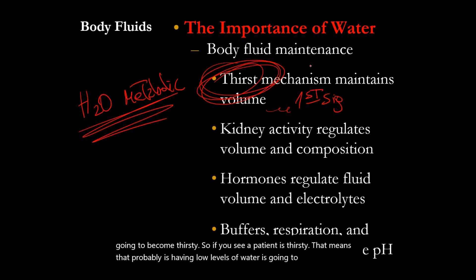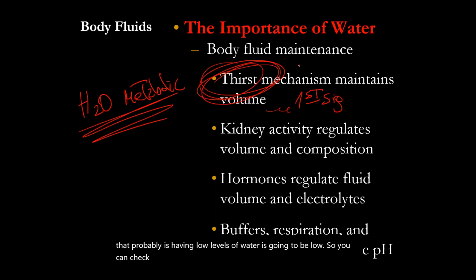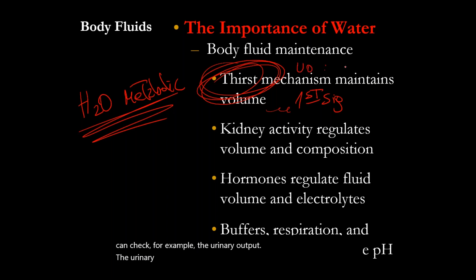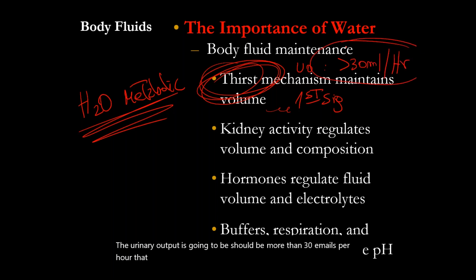You can check, for example, the urinary output. The urinary output should be more than 30 mL per hour. That is always coming up — it's very important to know that.